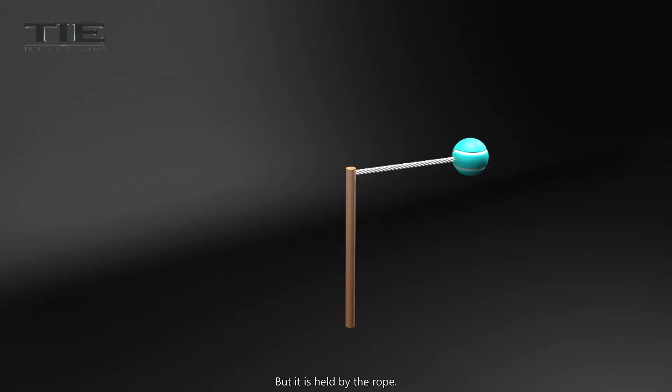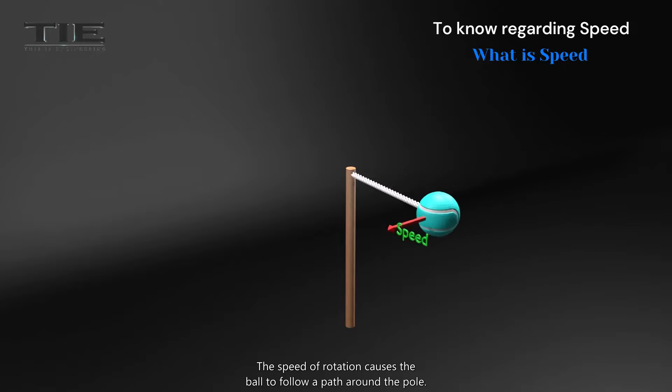But it is held by the rope. The speed of rotation causes the ball to follow a path around the pole.